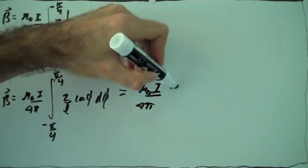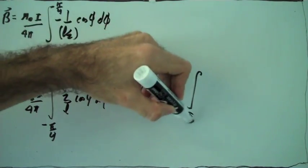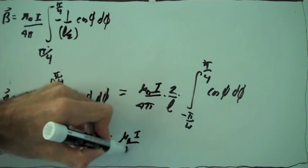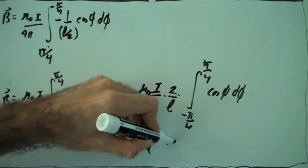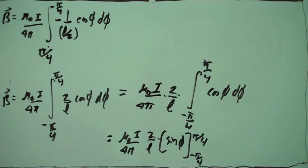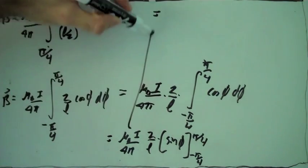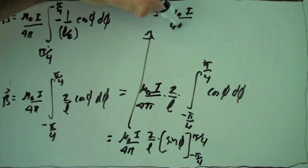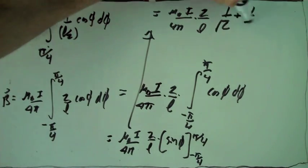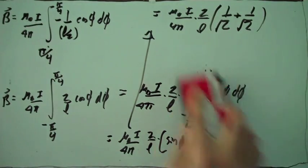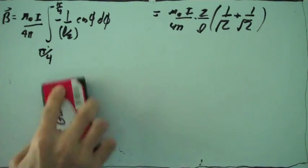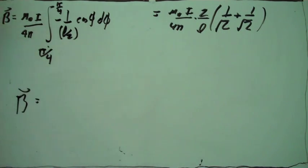We only have the integral of cosine of phi, which integrates to sine of phi. Doing this integral is straightforward — it's just sine of phi evaluated at the limits of pi over 4 and negative pi over 4. The sine evaluated at the two limits gives us a specific term, and we can easily simplify the whole expression to get the magnetic field produced by one side.